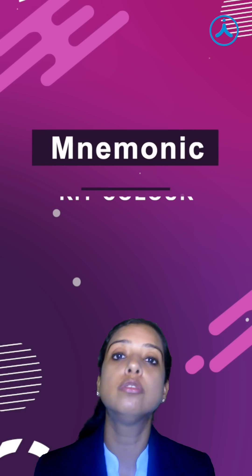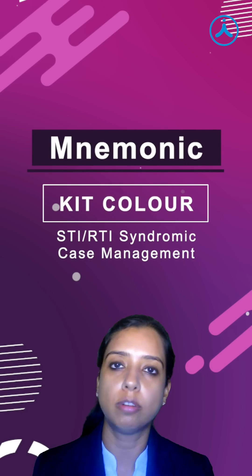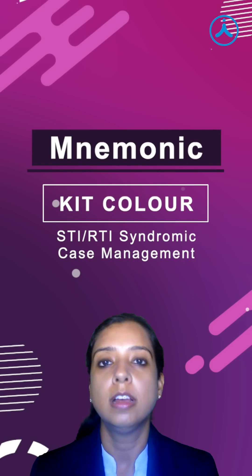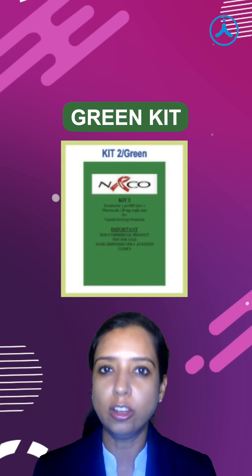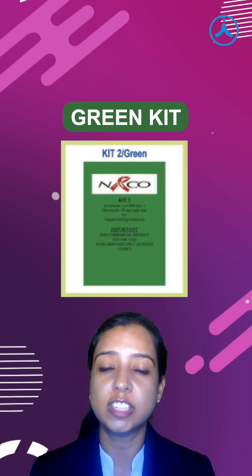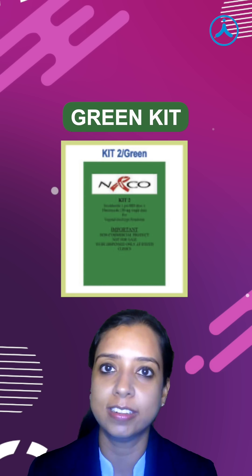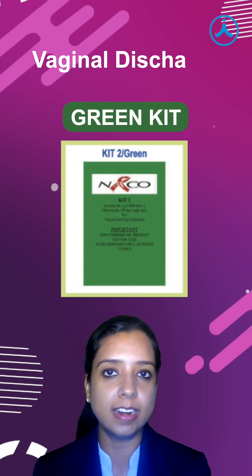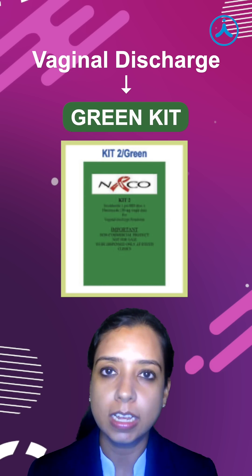Here is the mnemonic to remember the kit colour in your syndromic management. First, green kit. Trichomonas, which causes vaginitis, has green frothy discharge. So, vaginal discharge is green kit.